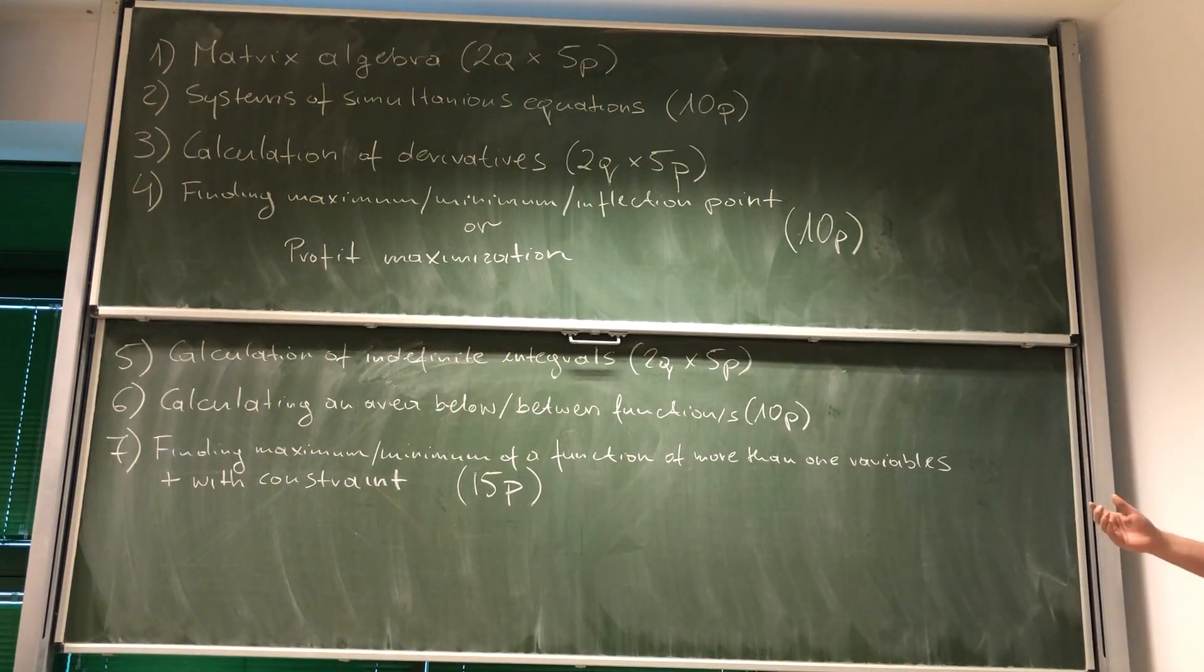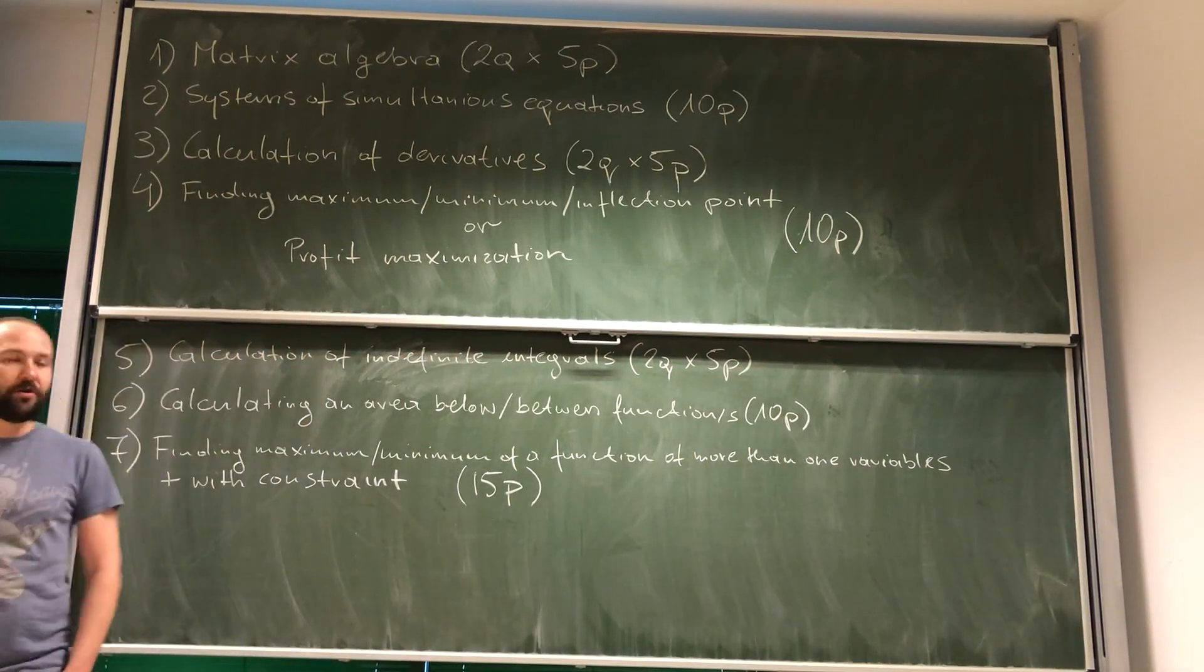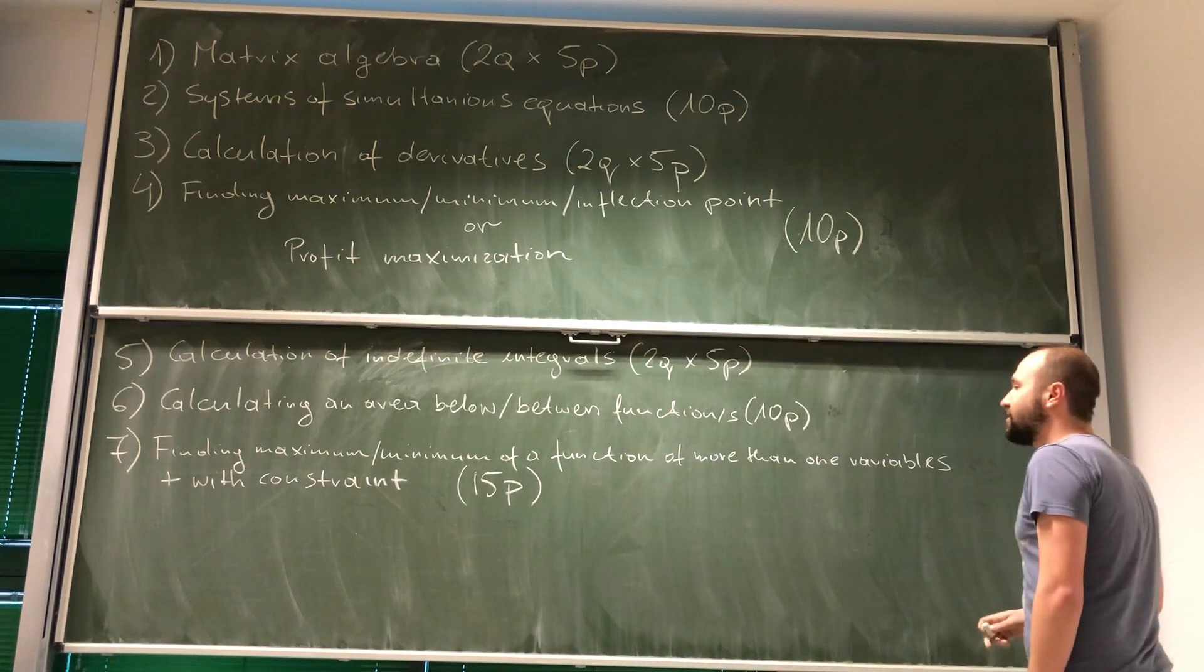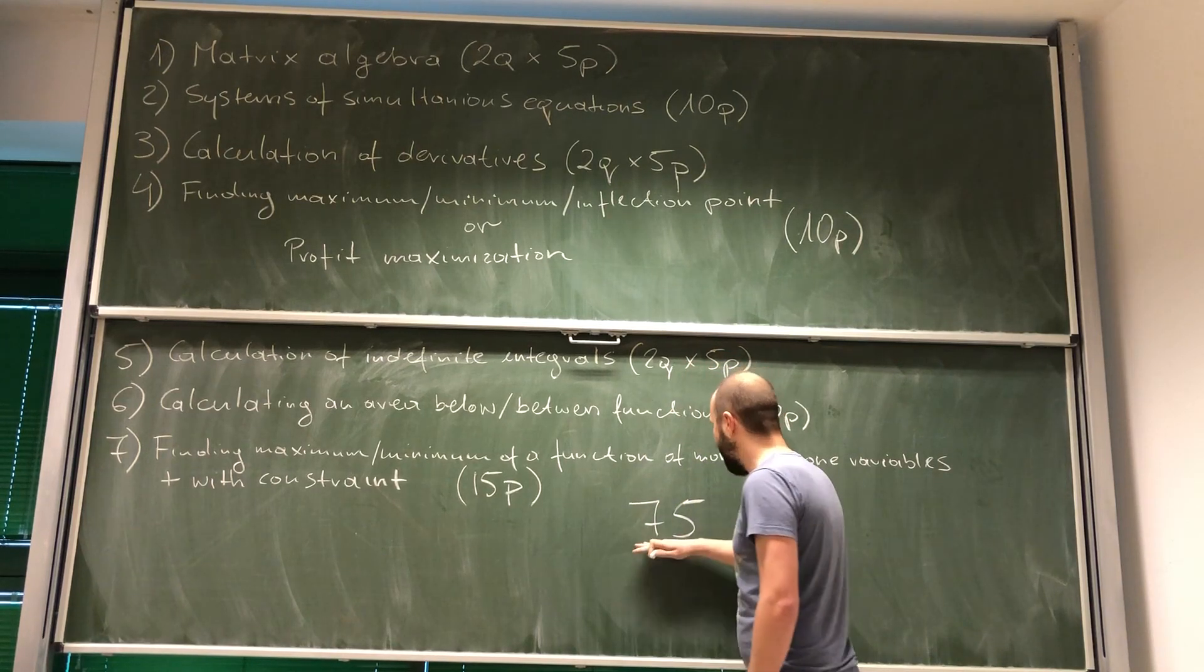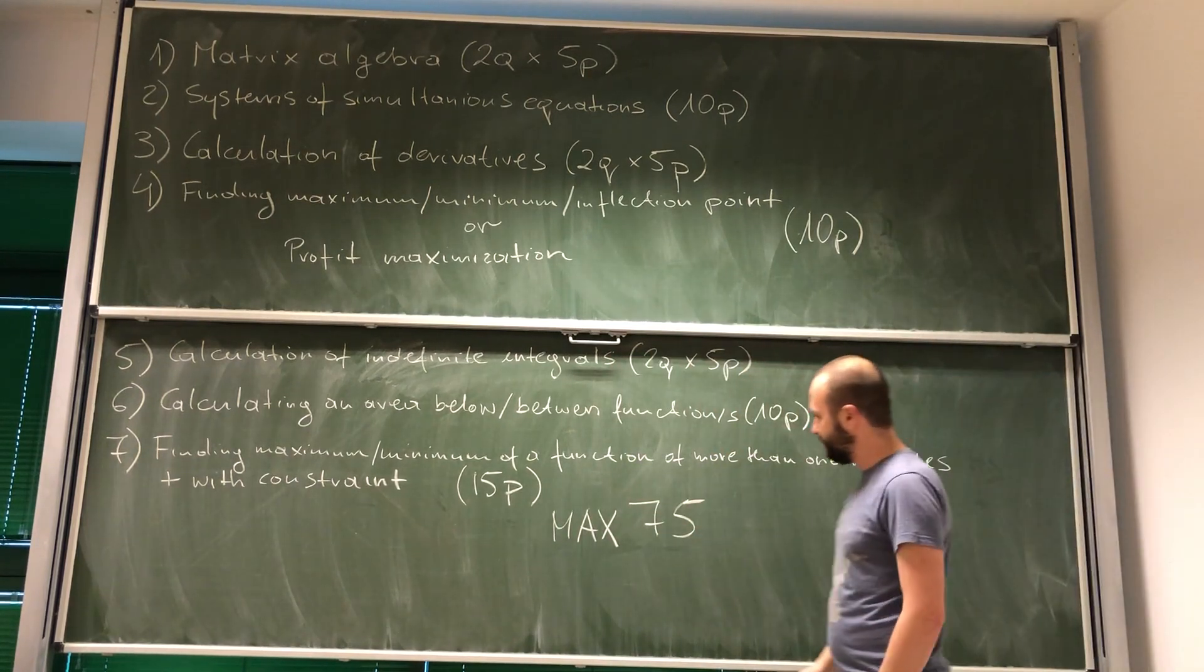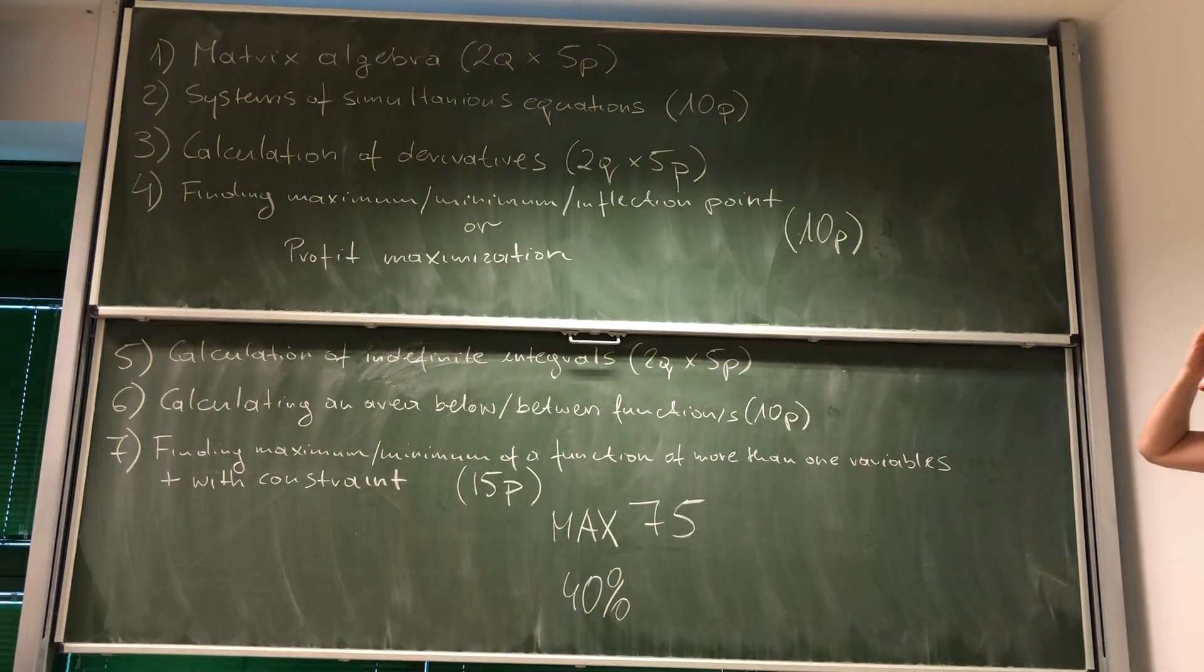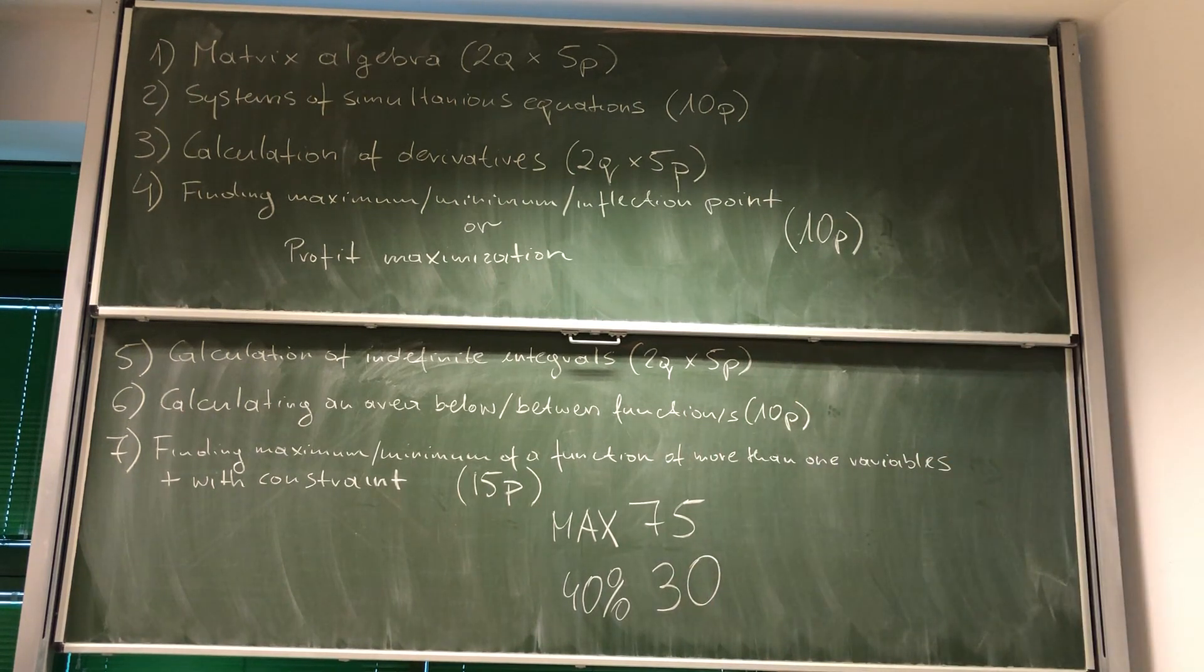Okay, so this is how it's going to look like. And the good thing about the fact that you're going to do a test online is that you're going to know your result right away. Now, as you can see over here, the total amount of points you can get is 75. So this is the maximum amount. Now, in order to pass, you need to have at least 40%. So you need to have at least 30 points.